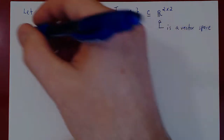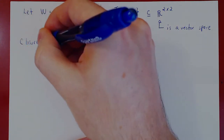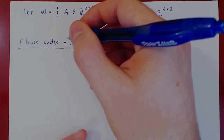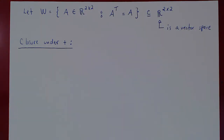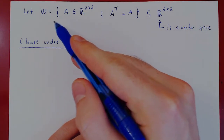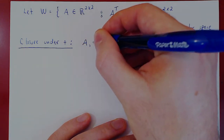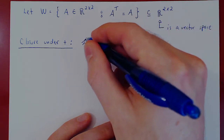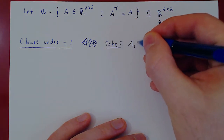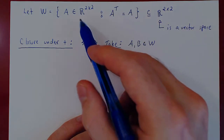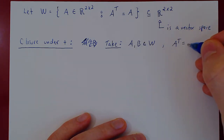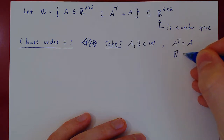Let's check closure under addition first. This means we take two elements of our space and show that their sum is still in the space. Take A, B as elements of W. Therefore they are 2 by 2 matrices that are symmetric, so A transpose equals A and B transpose equals B.